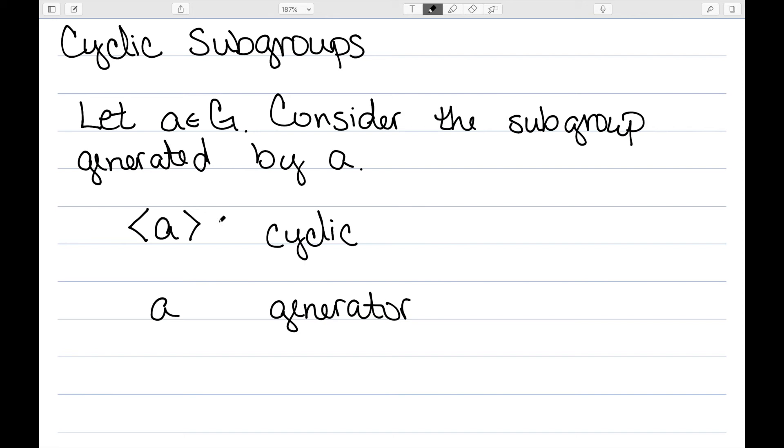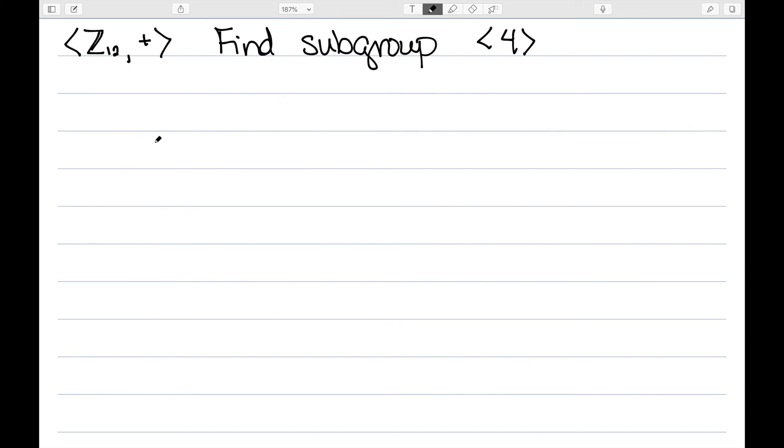Let's look at an example of this. Once again I'm going to consider the group Z12 under addition and I want to find the subgroup generated by 4. Well we need to start with 4. We also need 4 plus 4 is 8. 4 plus 8 is 12 which gives me a 0 and we can see that that gives me everything.